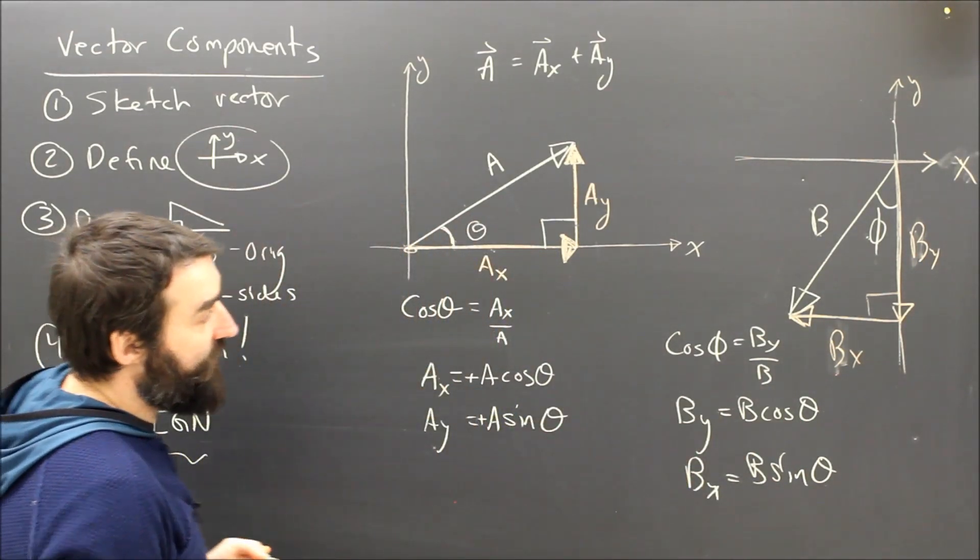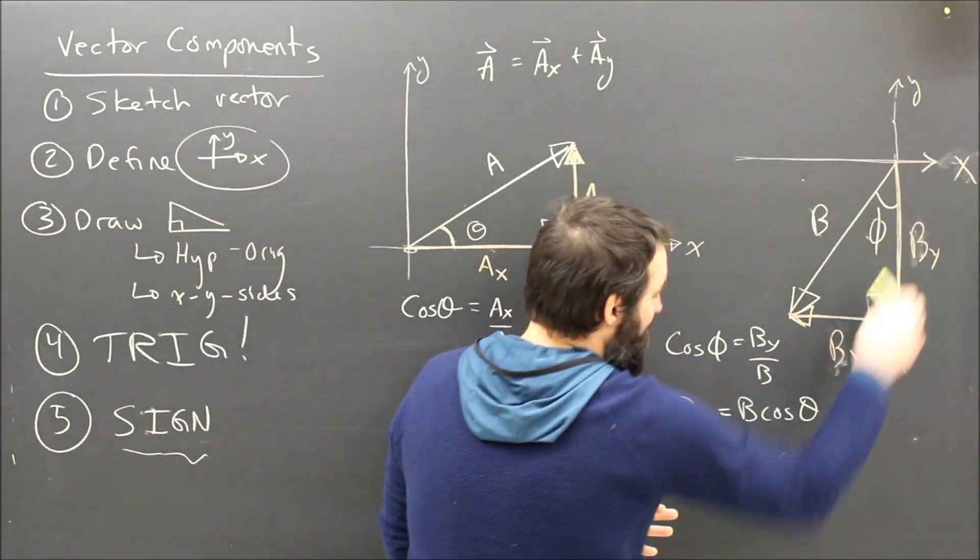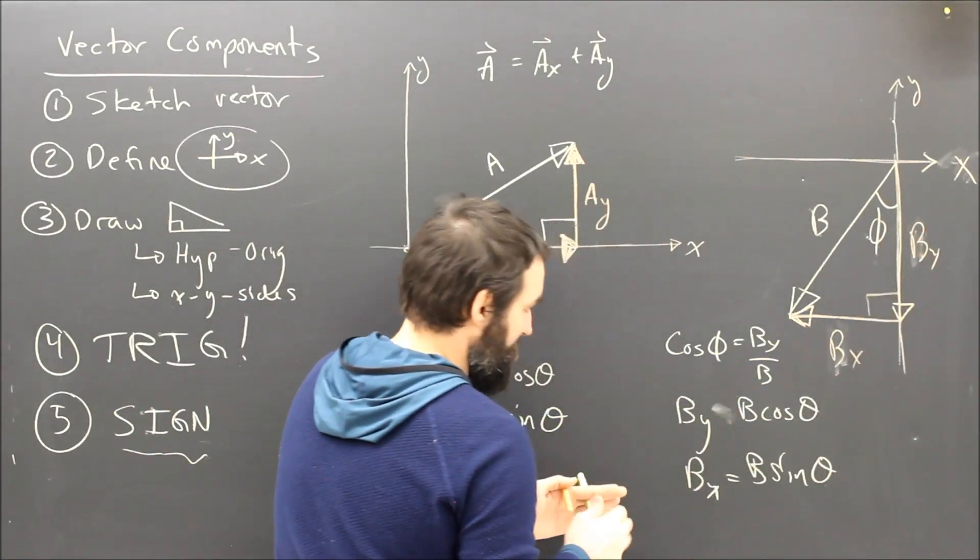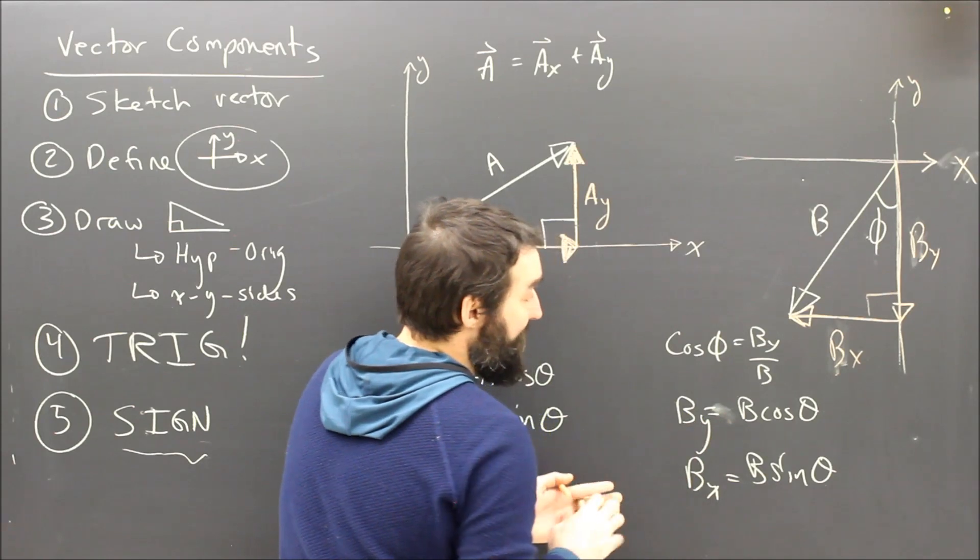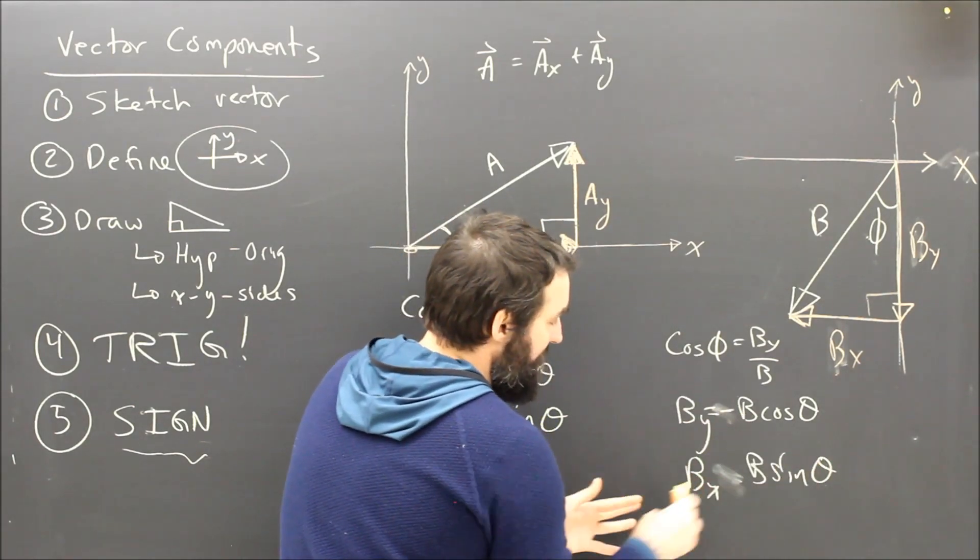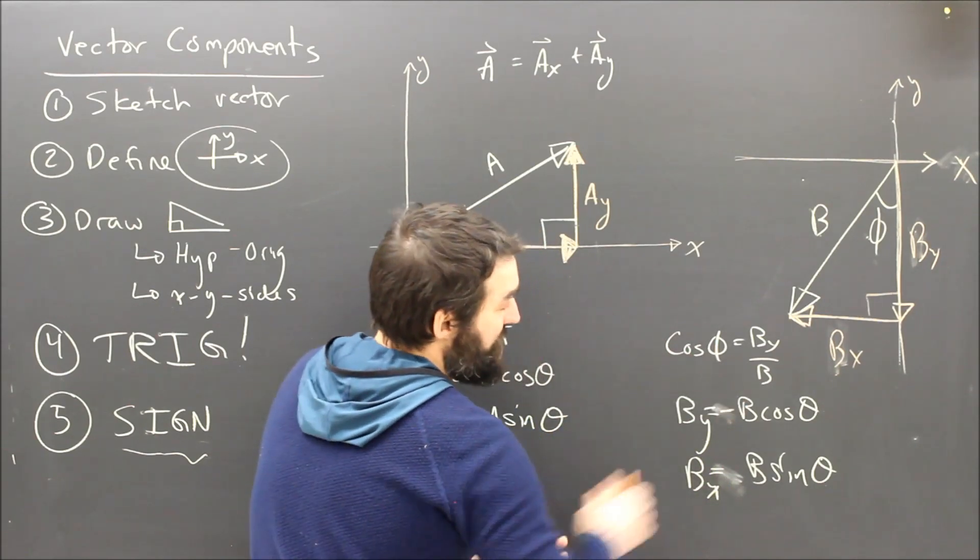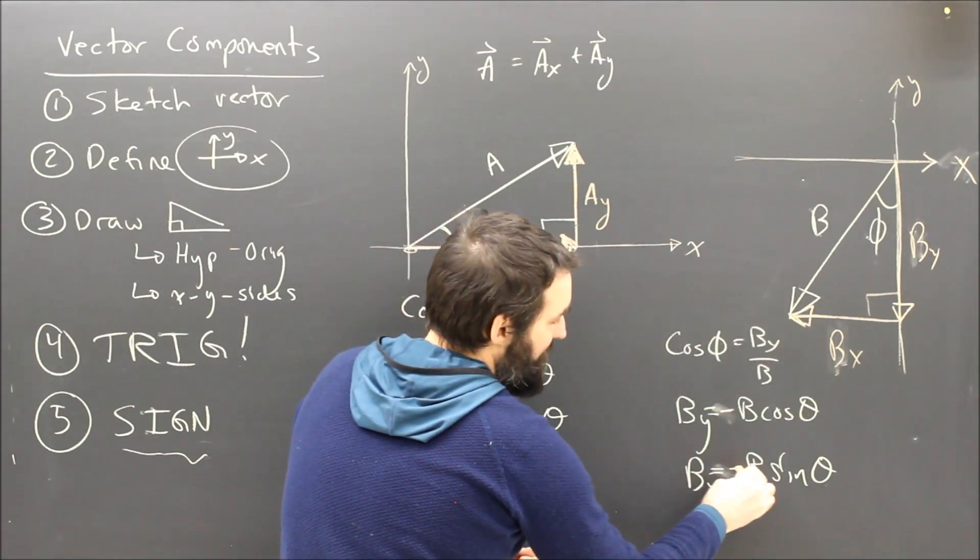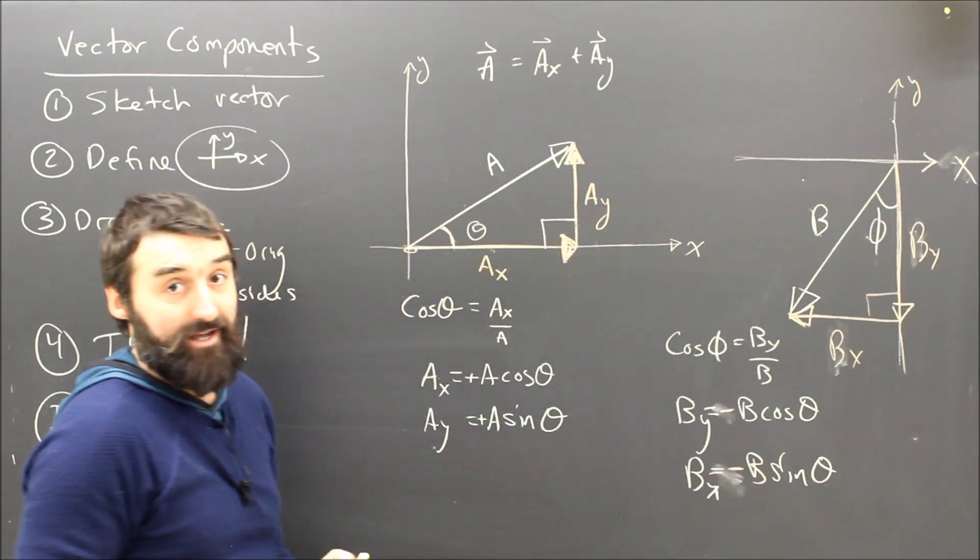Don't forget step five though, my signs. By is in the negative y direction. So I'm going to call By negative B cos theta. Whatever my answer is, I've got to make sure it's negative. Same with Bx. It's left. We said right was positive. So that's going to be negative By sine theta.